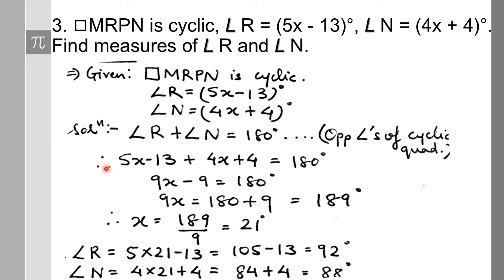Adding: (5x − 13) + (4x + 4) = 180 degrees. That gives 9x − 9 = 180, so 9x = 189 and x = 21. Angle R is 5(21) − 13 = 92 degrees. Angle N is 4(21) + 4 = 88 degrees. A simple application of the cyclic quadrilateral theorem.